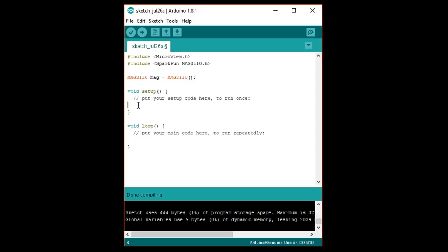In setup, write uview dot begin to initialize the microview display. Under that, write uview dot clear all in capital letters, and uview dot display to clear the microview's memory and display. Finally, write mag dot initialize to start the magnetometer.